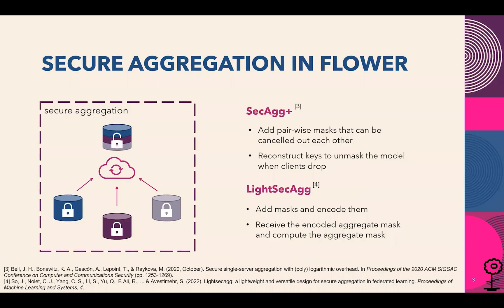The solution is to allow and only allow the server to see the aggregate model. In secure aggregation, clients will add masks to their local model updates, which makes them completely indistinguishable from uniformly random sequences. And the server can only unmask the aggregate model.